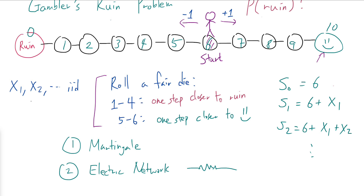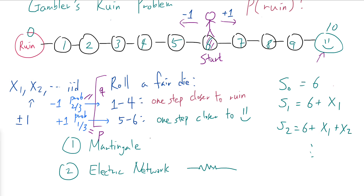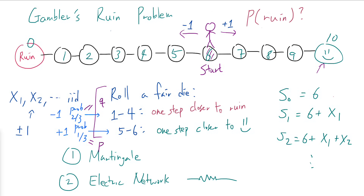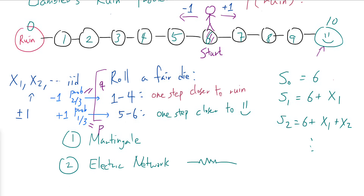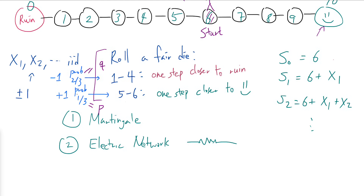Each increment takes values plus or minus one, where the probability of getting plus one — one step closer to the smiley face — is 1/3, because you need to roll 5 or 6 on a fair die. Rolling 1 through 4 means you move negative one, and this happens with probability 2/3. Let's call p = 1/3 and q = 2/3, so p + q = 1.